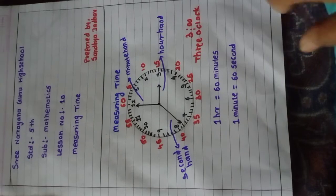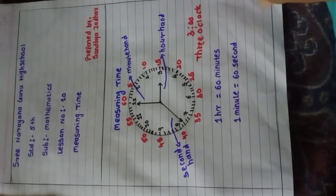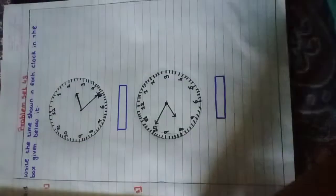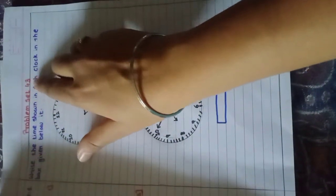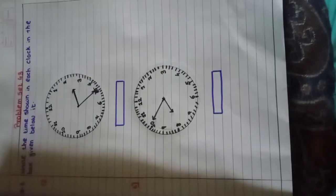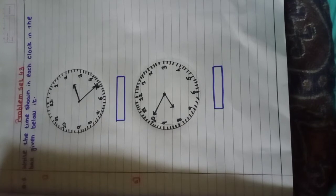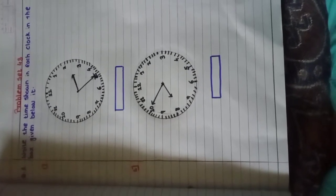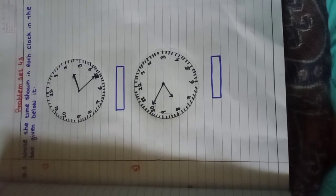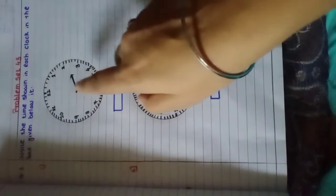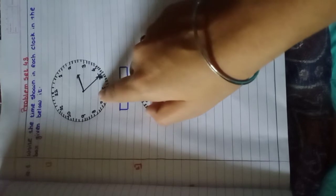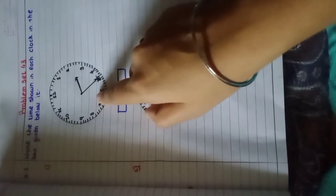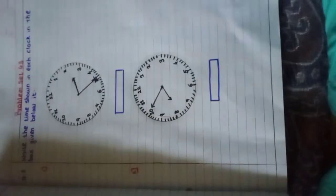Now we will go to problem set 43. See here, look at here, problem set 43. Write the time shown in each clock in the box given below. Let's do it. See here in question number 1, you can see the clock and their hands. What is the time in the first clock?